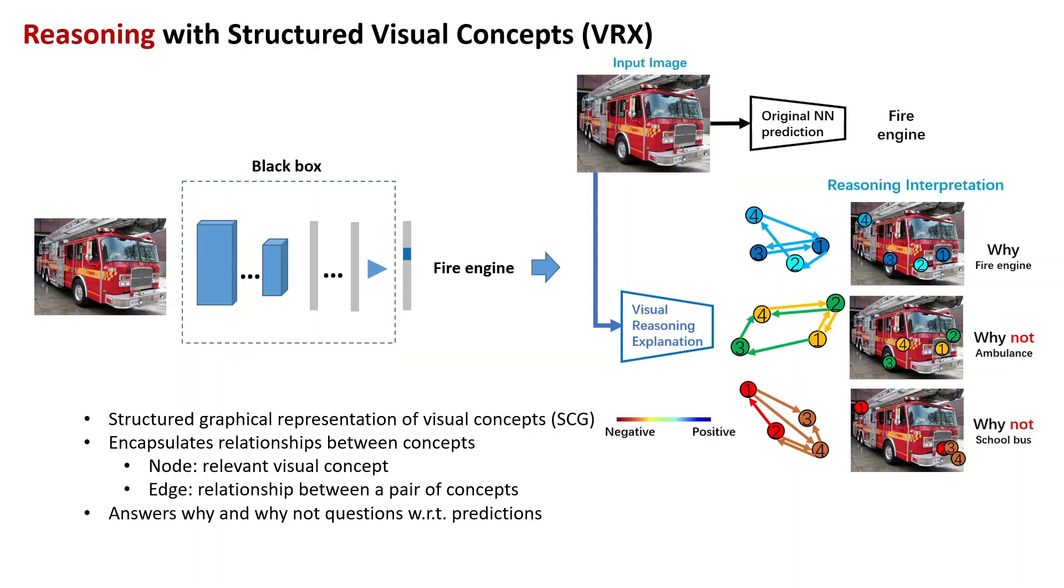Colors of graph nodes and edges represent the positive or negative contribution to the final decision. For the fire engine case, first, all detected four fire engine concepts have positive contribution to the fire engine decision, and second, all concept relationships also have positive contribution. That means, both visual concepts and concept relationships look like a fire engine.